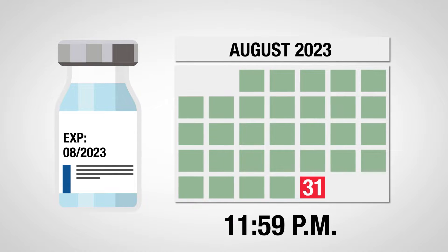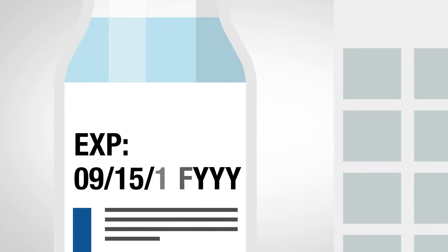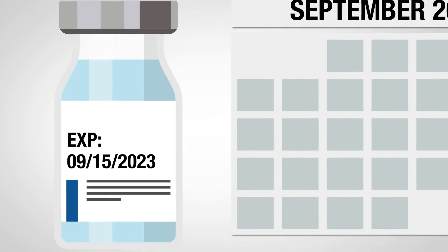In the case of month, day, and year, the vaccine may be used through the specified date. So if September 15, 2023 is on the vial, it may be used through 11:59 p.m. on September 15, 2023.